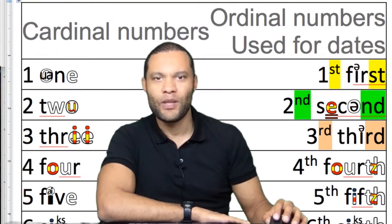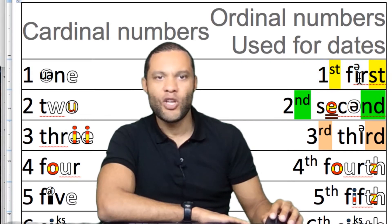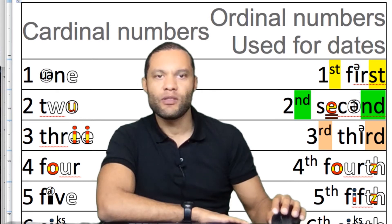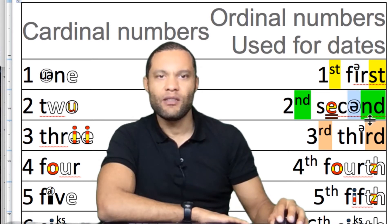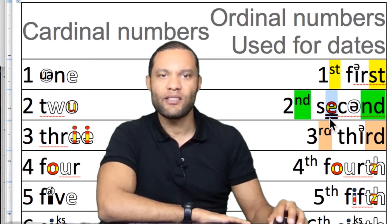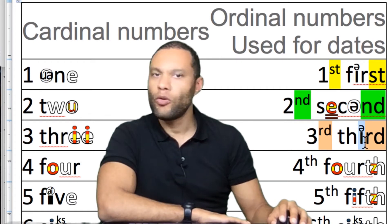Let's get straight down to it. We've got 'first' — this is not an 'I' sound, it's not 'ferst', it's 'first'. Then we've got 'second' — this is not 'SEcond', it's 'second'. The accent is here where you see the two double lines: 'second'.